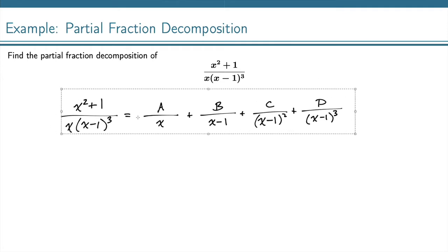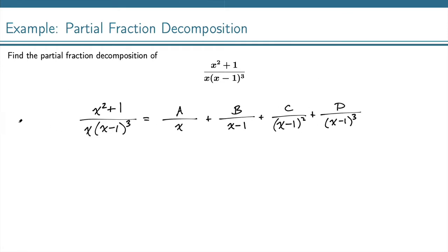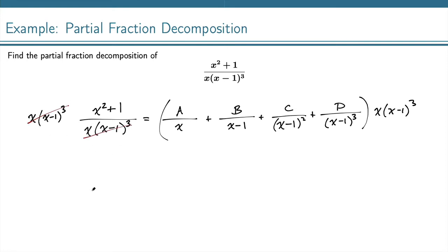The next thing we're going to do is multiply both sides of our equation by the denominator x times x minus 1 cubed. So on the left side of the equation, that is just going to cancel out that whole denominator, and we're left with just the x squared plus 1. On the right side of the equation, we take each fraction and multiply it by that. So A over x times x times x minus 1 cubed — the x will cancel, and we're left with A times x minus 1 cubed.